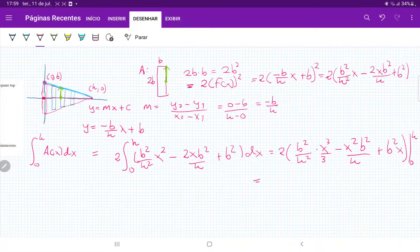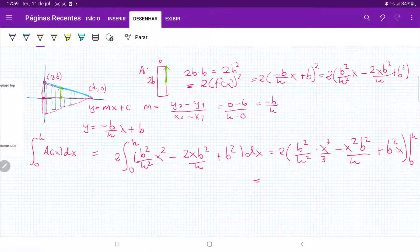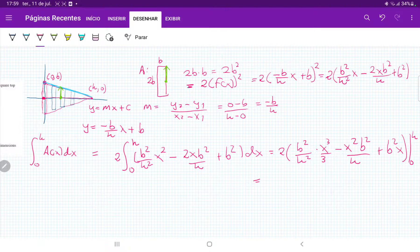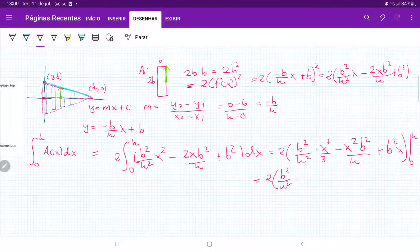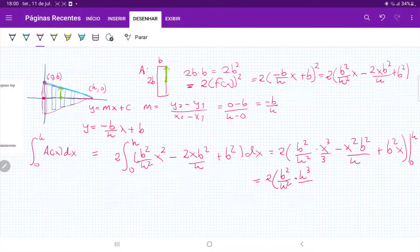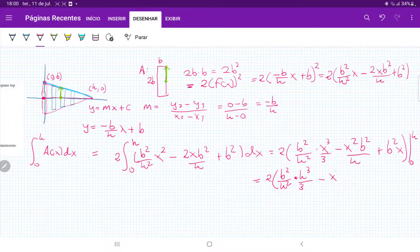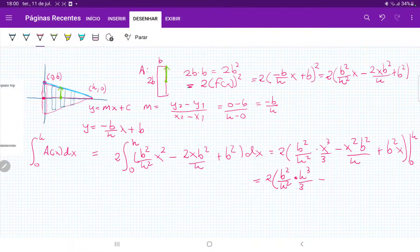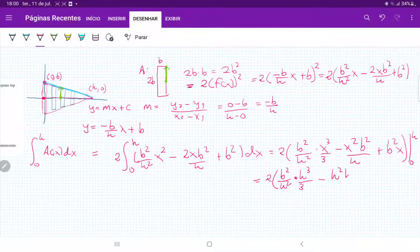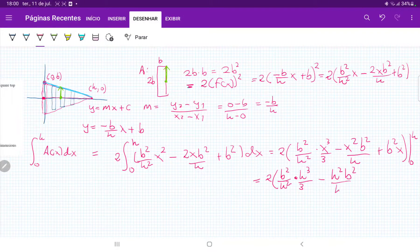So let's evaluate this. The lower part, whenever we plug it in for the x, is just going to disappear, going to go to 0, so we only care about the top part. So that is 2 times b squared over h squared, wherever I see x I'm going to plug in h, times h cubed over 3, minus h squared b squared over h, and then plus b squared h.